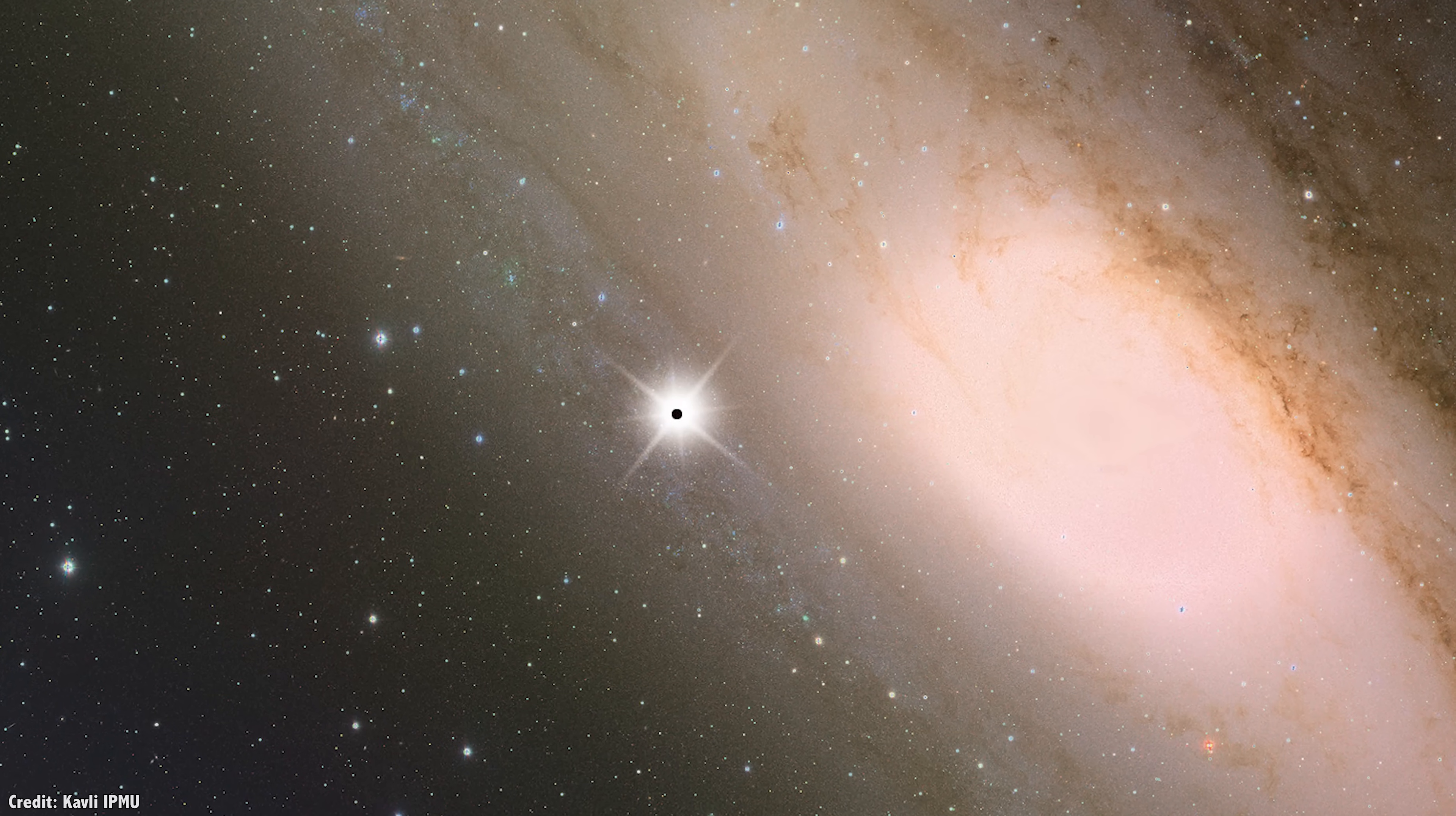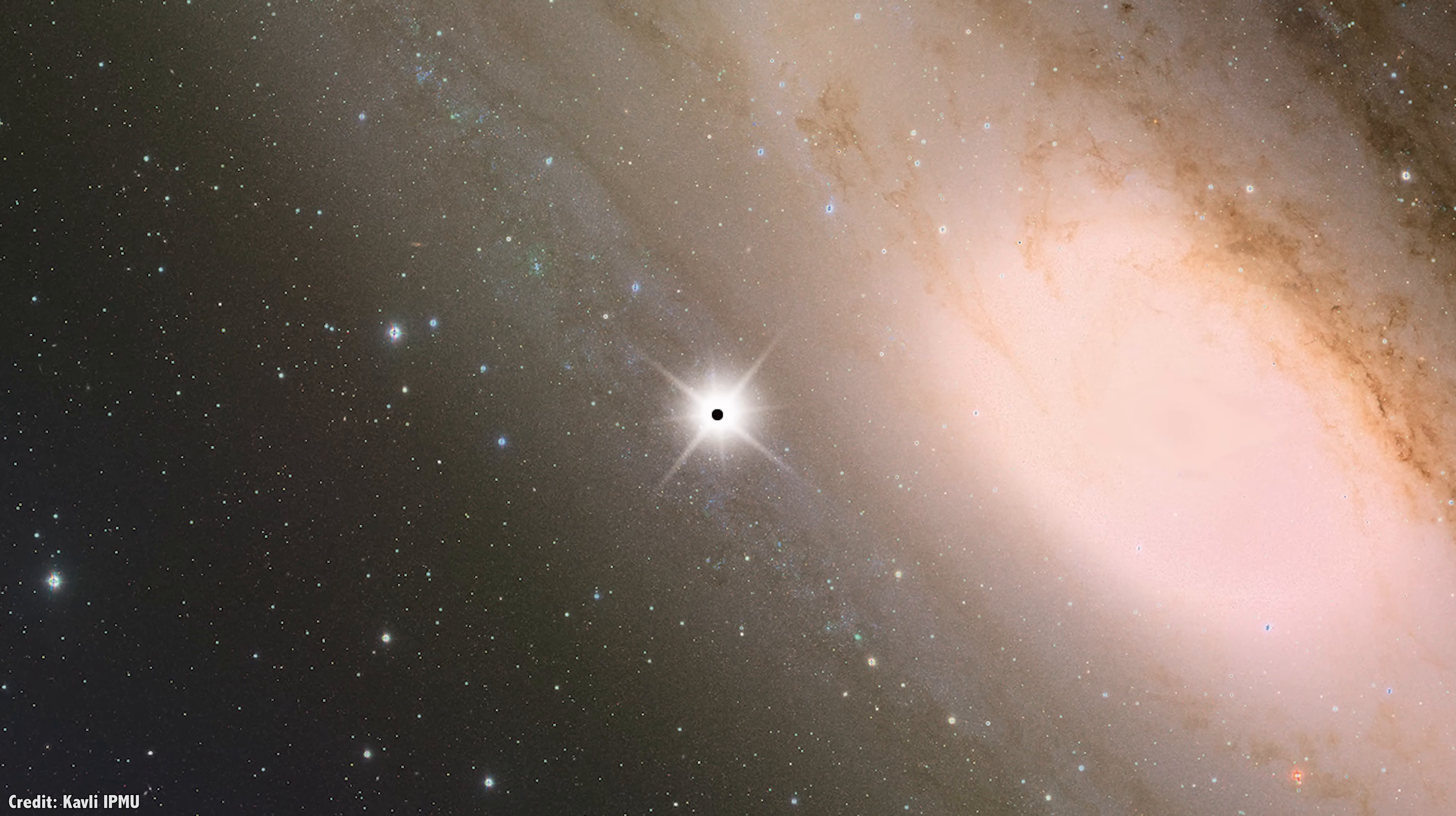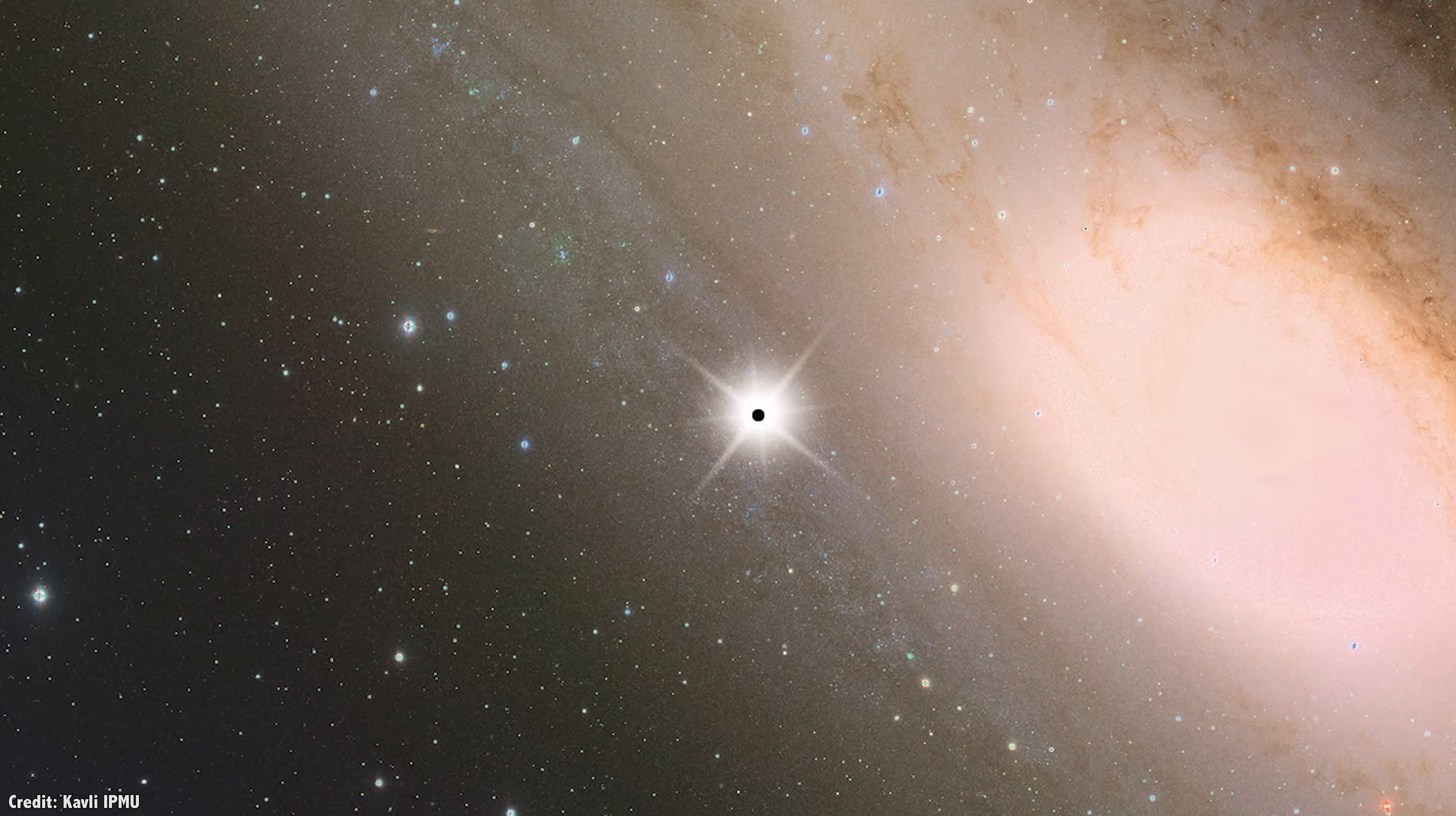After two years of data analysis filtering out all the noise and non-gravitational lensing events from the data, they were only able to identify a single star that brightened and then dimmed. And that's not enough black holes to fully explain dark matter.